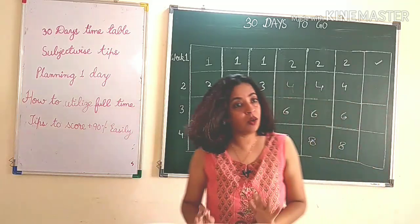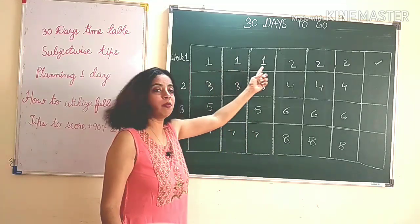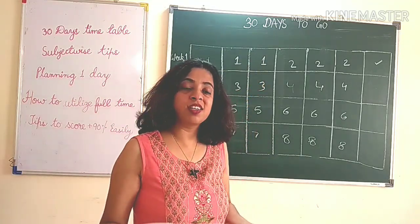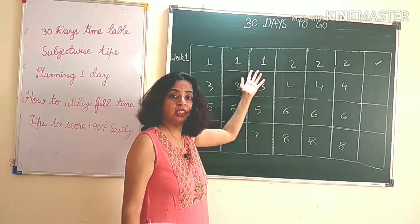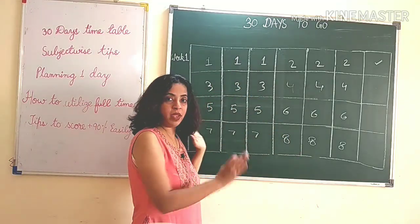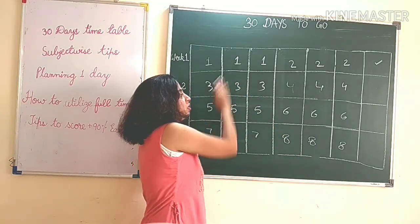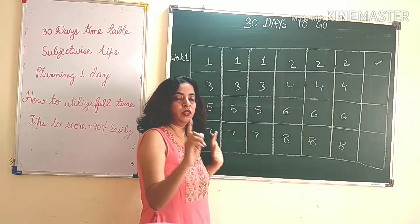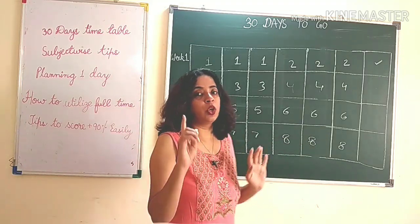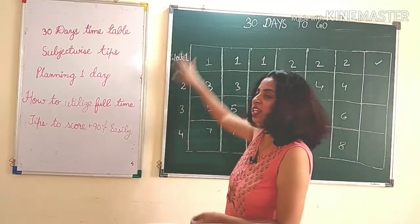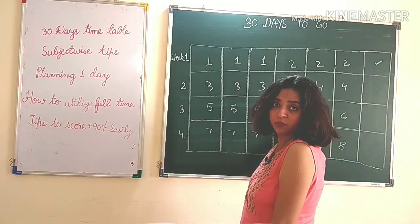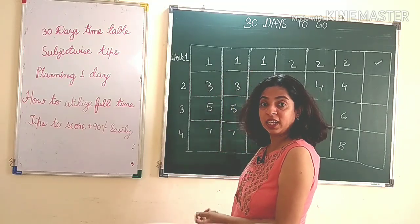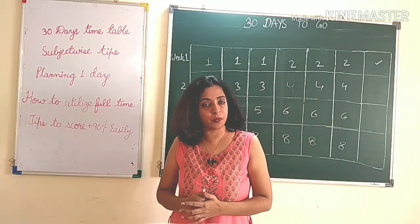Now here you will plan whether you want to do one subject in three days. First make this timetable and allot your subjects — your eight subjects, or five subjects, whatever subjects you have — so that you can keep on ticking them off and it motivates you.